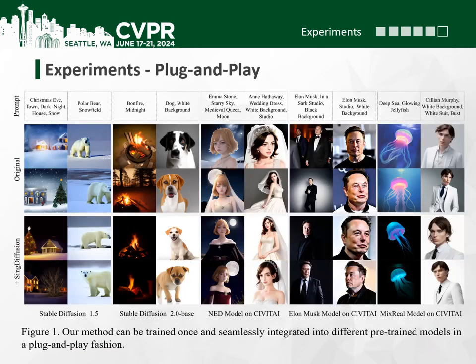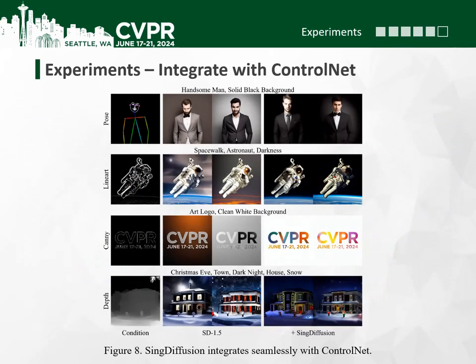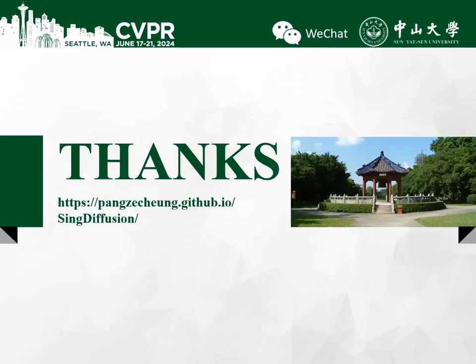Since our method is plug-and-play, sinc diffusion can be applied to different models like Stable Diffusion 1.5 and 2.0 for tackling the average brightness issue. Our method can also be applied to control lighting. This concludes my presentation. For more details, please visit our GitHub. Thank you.